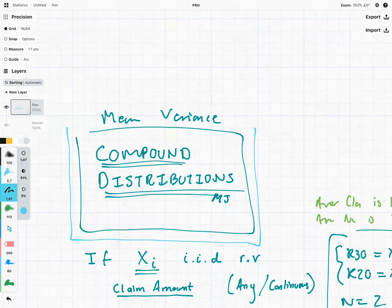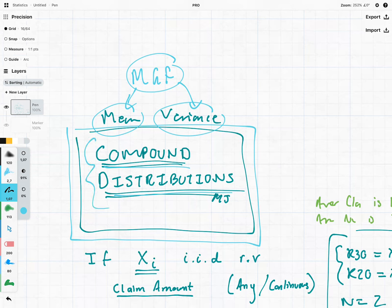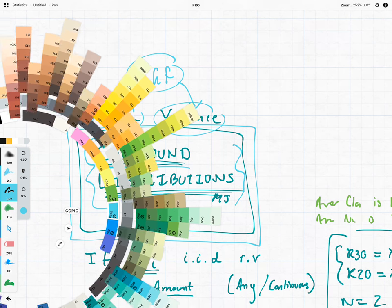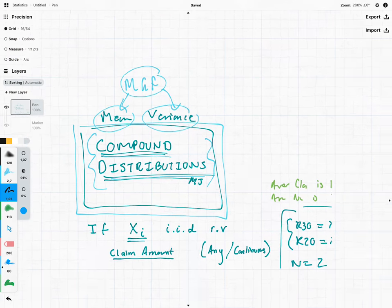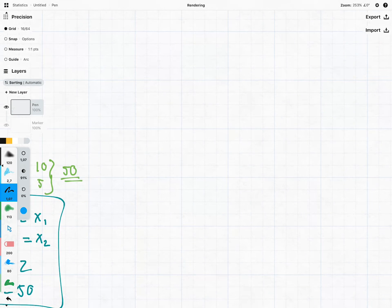Hi everyone, it's MJ and we are returning to compound distributions. Although in this situation what we're going to be doing is using the moment generating function to help us calculate the mean and the variance of these kind of distributions.